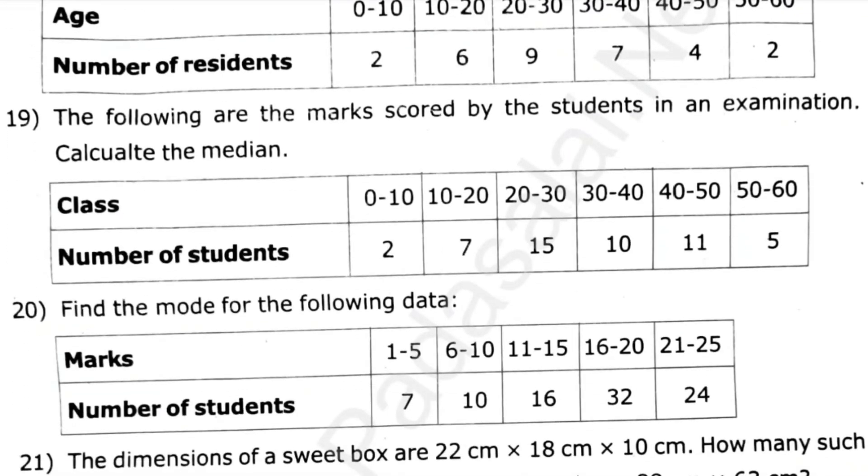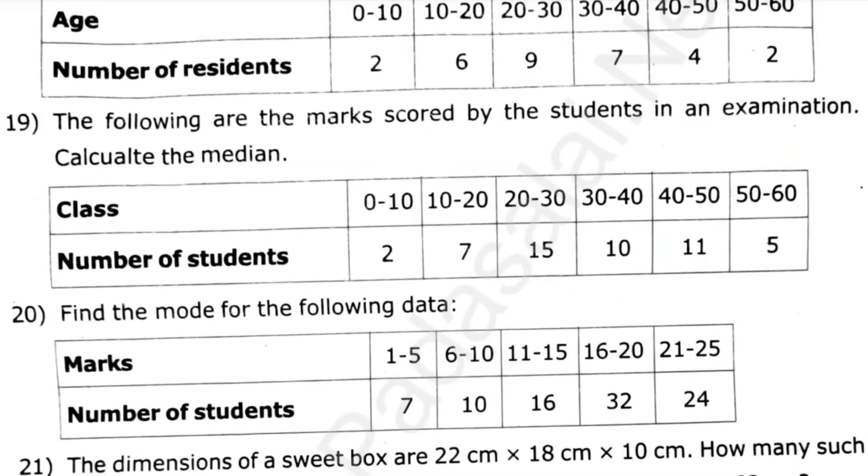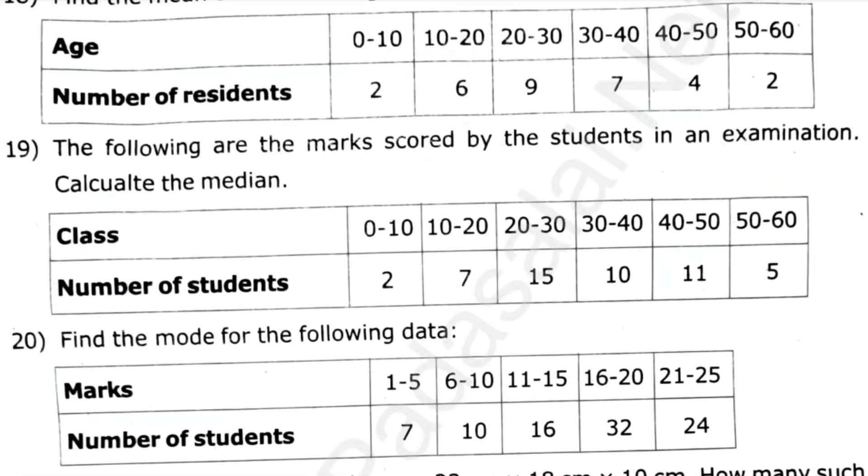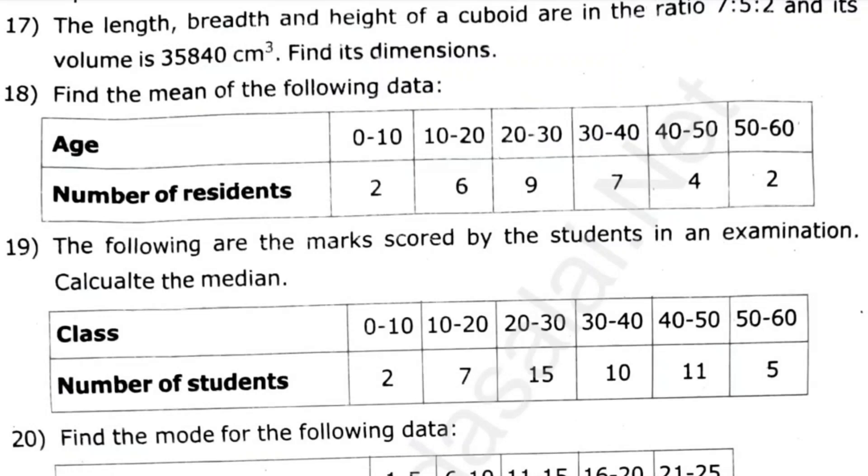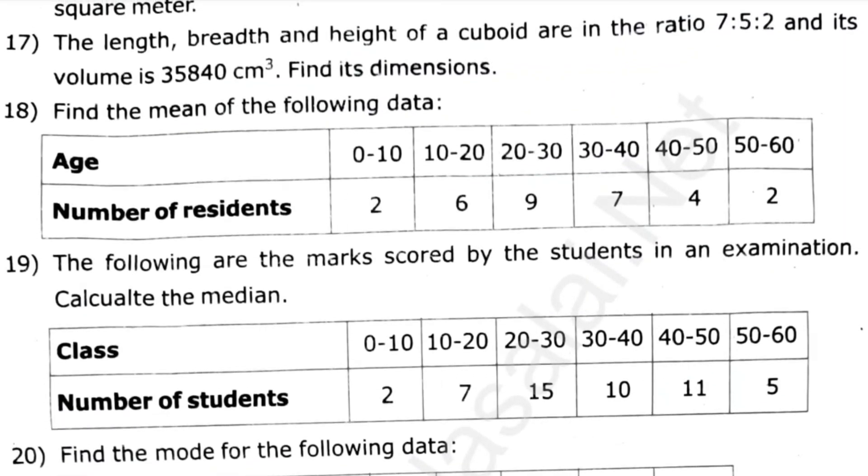So the dimensions of a navy number are 22 cm, 18 into to 10, 17. How much such box can be packed in a carton of diamond suns? 1m x 83m. Let's see how much this box can be packed.